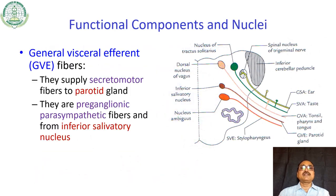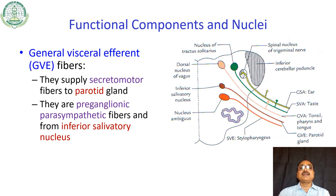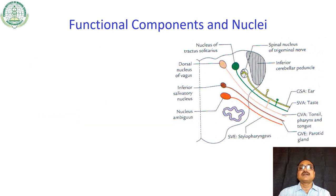Another component present in the glossopharyngeal nerve is general visceral efferent. These fibers supply secretomotor or parasympathetic fibers to the parotid gland. They are pre-ganglionic parasympathetic fibers arising from the inferior salivatory nucleus.